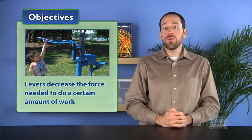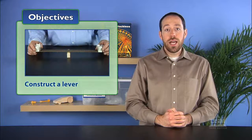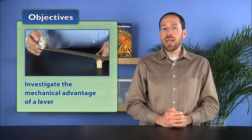In Activity 2, Levers, students are introduced to the first of six types of simple machines, the lever. Students first discover that levers can decrease the force needed to do a certain amount of work. They then construct a lever and finally investigate the mechanical advantage of a lever by experimenting with the position of the fulcrum, load, and effort.